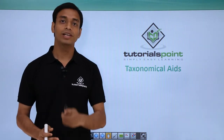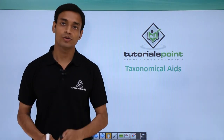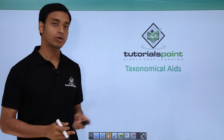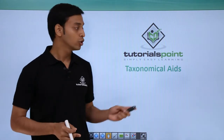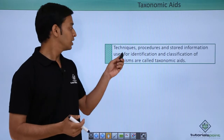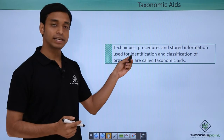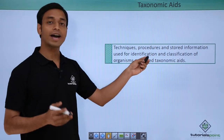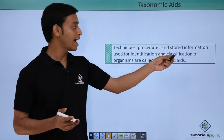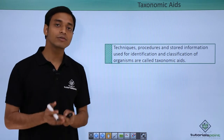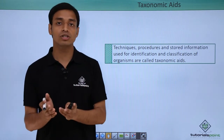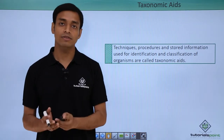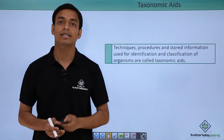Welcome to Tutorials Point. In this video we are going to talk about taxonomical aids. These are techniques, procedures, and stored information which are used for identification and classification. We have tried to adopt some procedures or techniques in order to preserve or conserve different species of plants and animals.